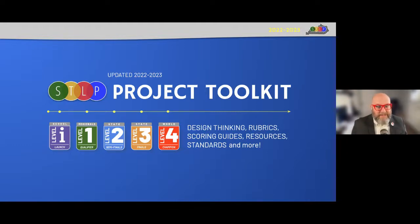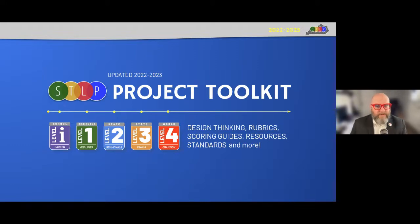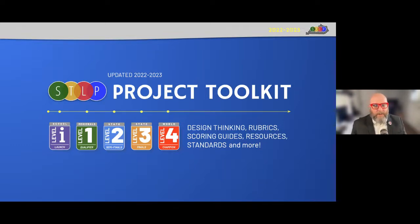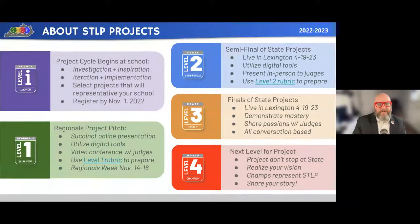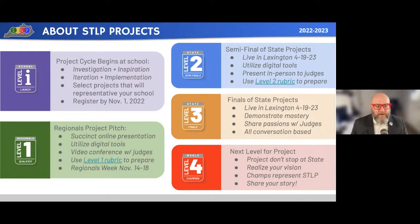You might even end up being a state champion out of it. We have organized a project toolkit that will take you through every step of the way. It's updated regularly. Right now we're going from level I all the way up to level four through the project cycle. Level I is the current period, where students should be investigating, looking for inspiration, iterating and implementing ideas to get their project off the ground.